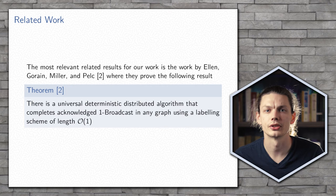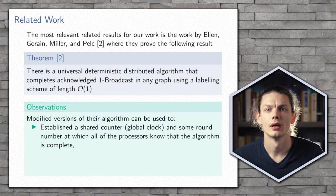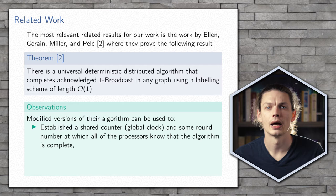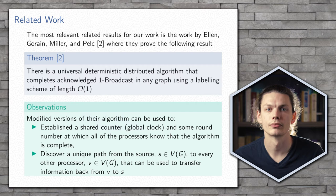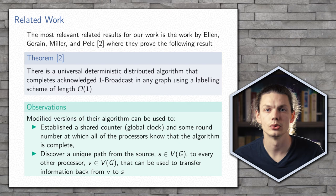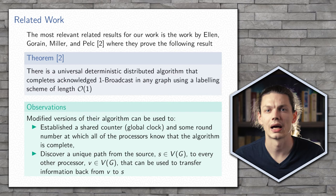In the acknowledged broadcast problem, not only does the source message need to be distributed to the rest of the network, but the source has to be informed once the broadcast is complete. This is important for us because a modified version of their algorithm can be used to establish a shared timer amongst all the processors, as well as a shared time at which all the processors know that the broadcast has been completed.